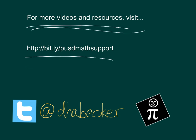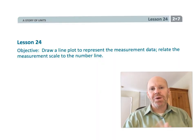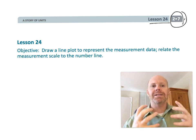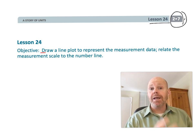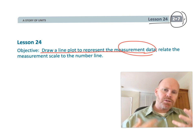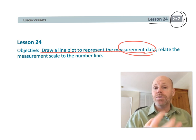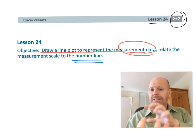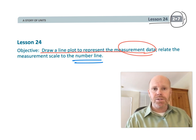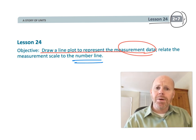This is second grade module 7 lesson 24. In this lesson students are going to learn how to draw a line plot to represent collected data. The important thing is this line plot is not just a statistical tool — it's also a way to connect students to the number line, which is so important in second grade and in upper grades, allowing students to eventually connect fractions to that number line.